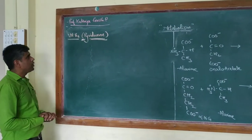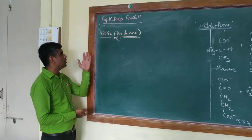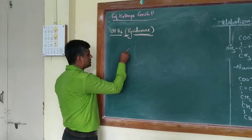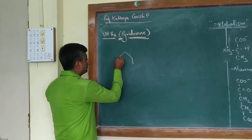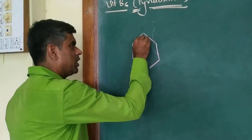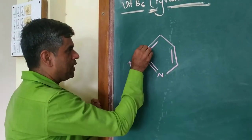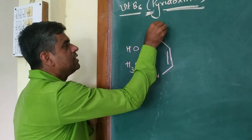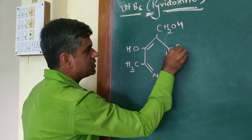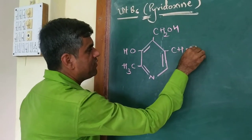The cofactor we will be talking about today is from the B complex group of vitamins — that is Vitamin B6, pyridoxine. If we look at the structure of pyridoxine, you will find it occurs in various forms. Each vitamin occurs in different forms.